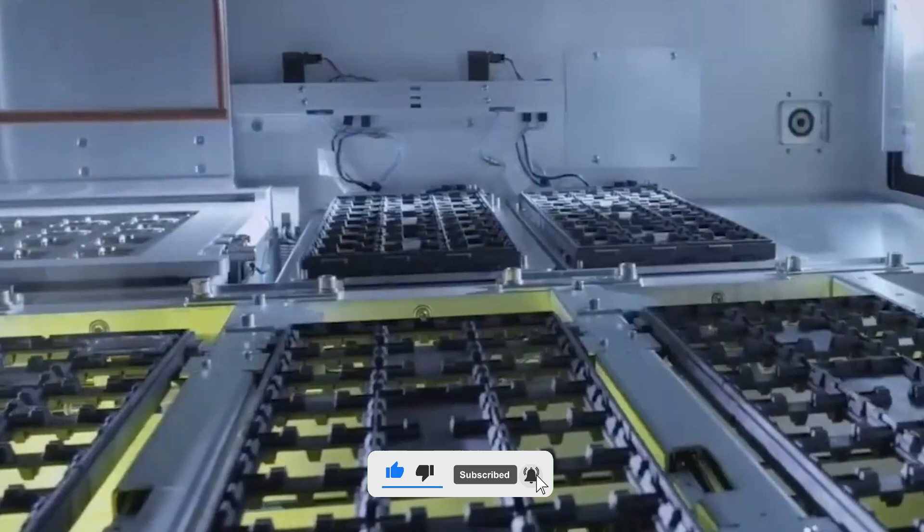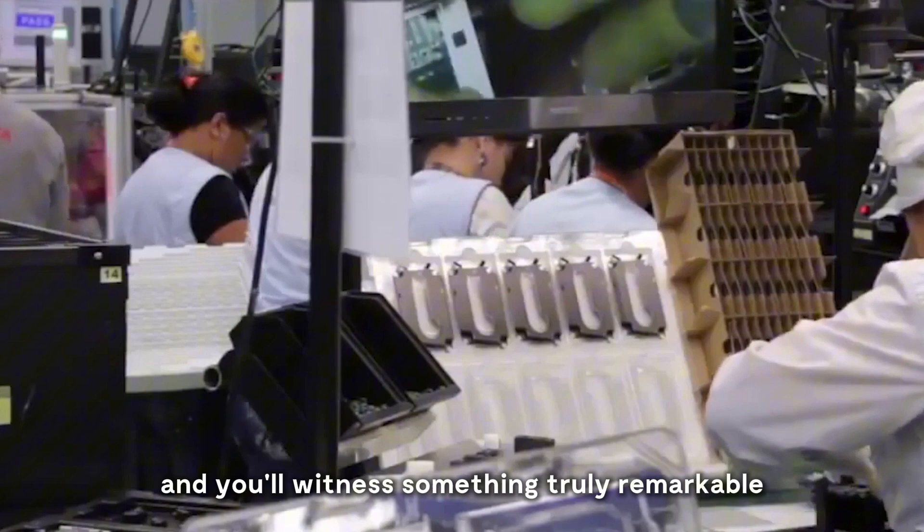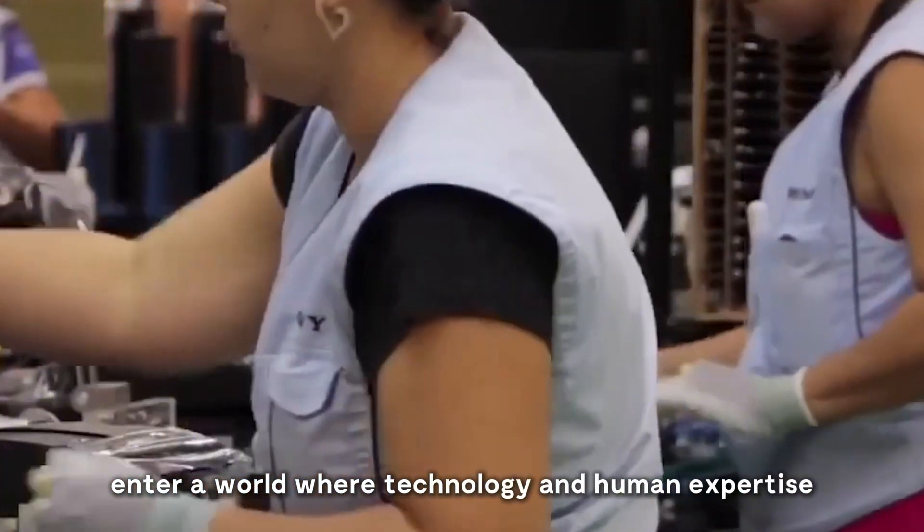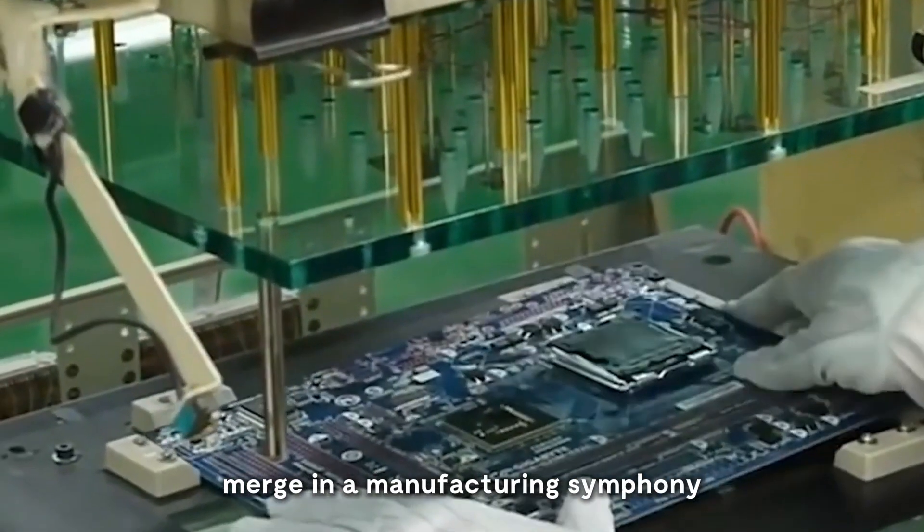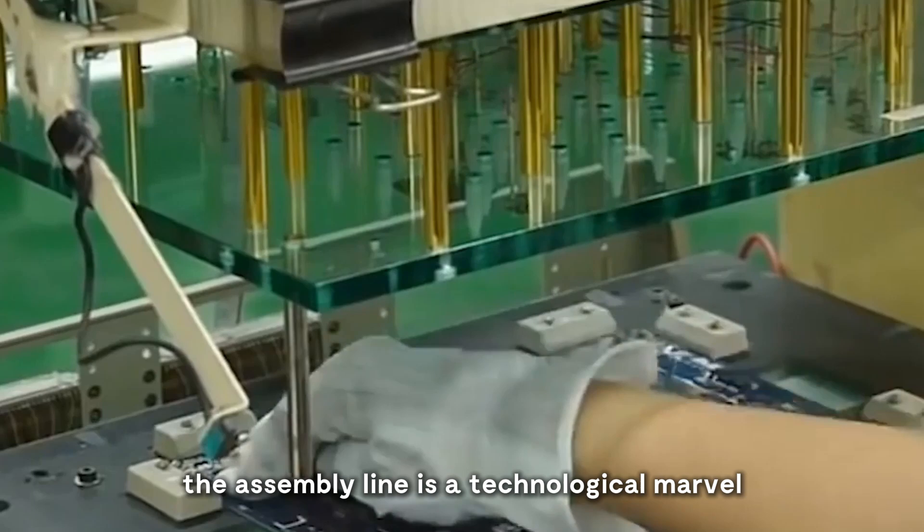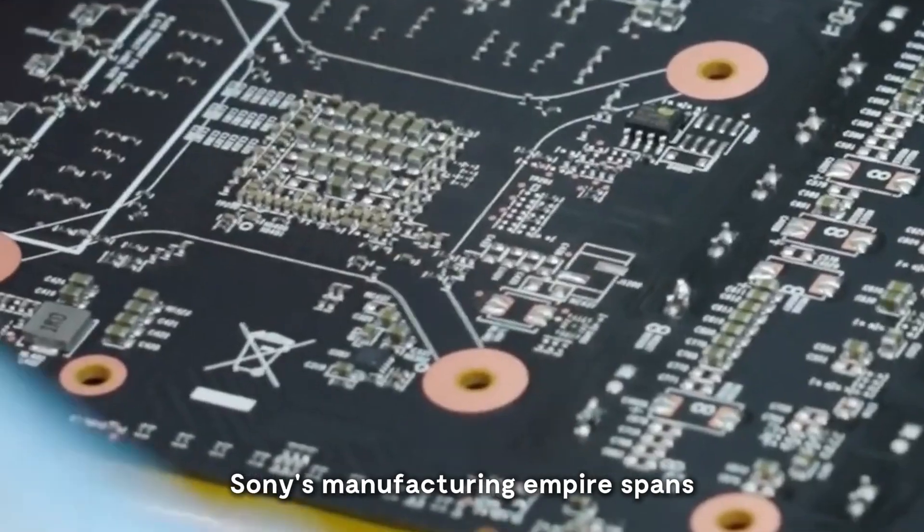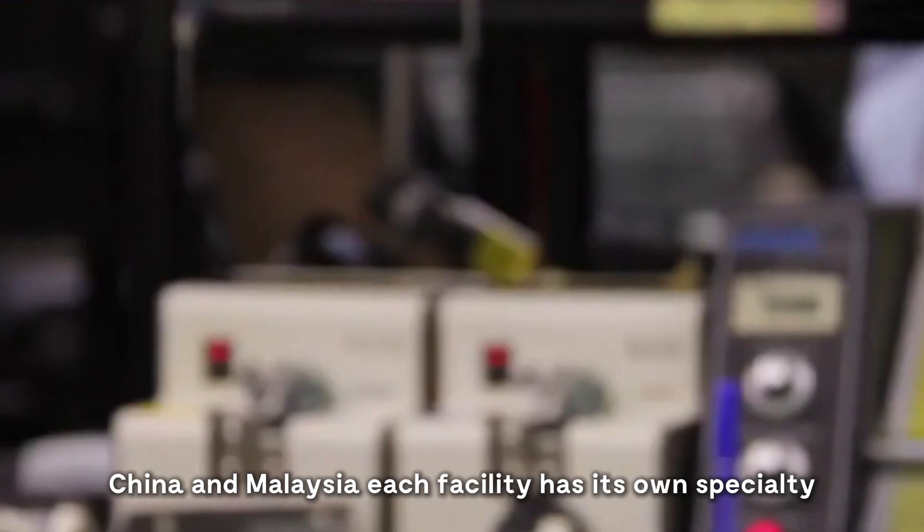Step through the doors of Sony's manufacturing facilities and you'll witness something truly remarkable. Those tiny components traveling from around the world enter a world where technology and human expertise merge in a manufacturing symphony. The assembly line is a technological marvel that most gamers never get to see. Sony's manufacturing empire spans across three primary locations: Japan, China, and Malaysia.